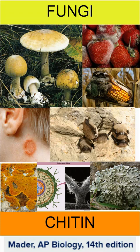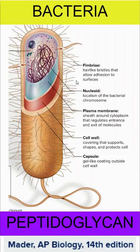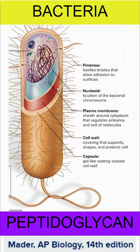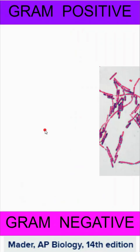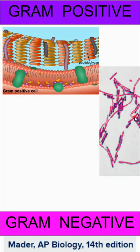Chitin is the same thing found in the exoskeleton of lobsters. When we start talking about bacteria, we need to talk about peptidoglycan, which is a carbohydrate mixed with protein peptide chains. As we look at a bacterial cell wall, all of these organisms still have their lipid bilayer, but in addition to that, bacteria also have a cell wall, and then they'll be surrounded in some type of capsule. When we distinguish between the different types of bacteria, we can have gram-positive and gram-negative. When they're stained, they might be purple or pink, and that has to do with how much peptidoglycan is in their cell walls.